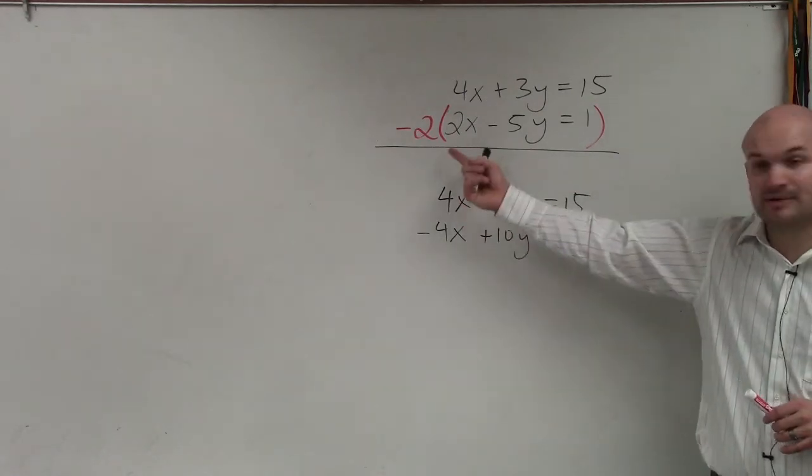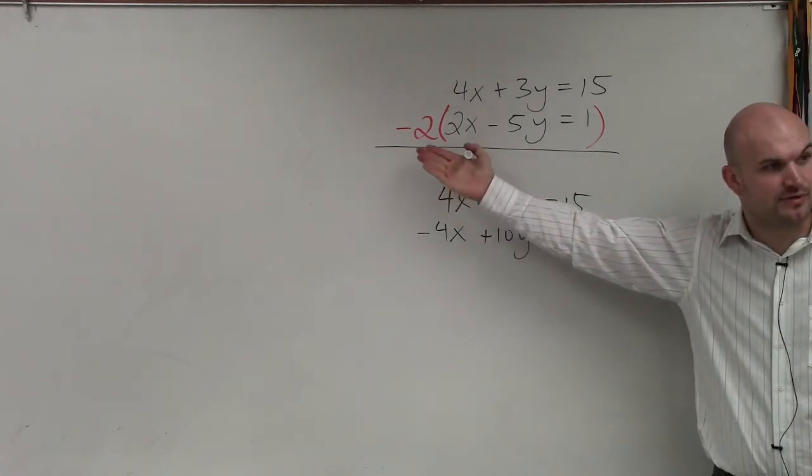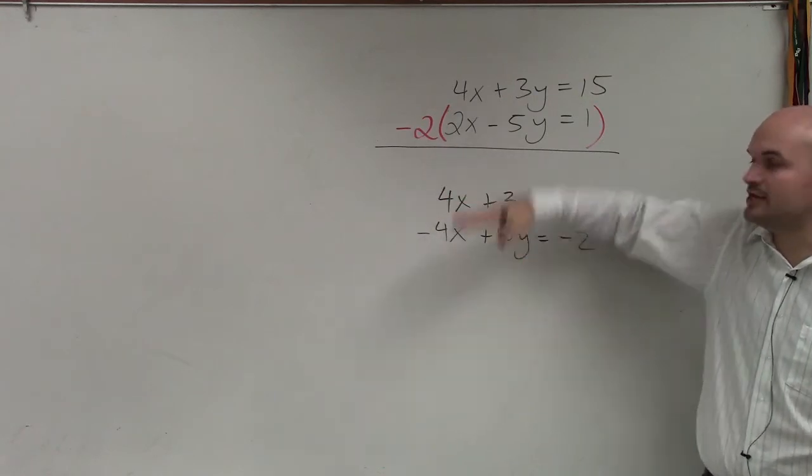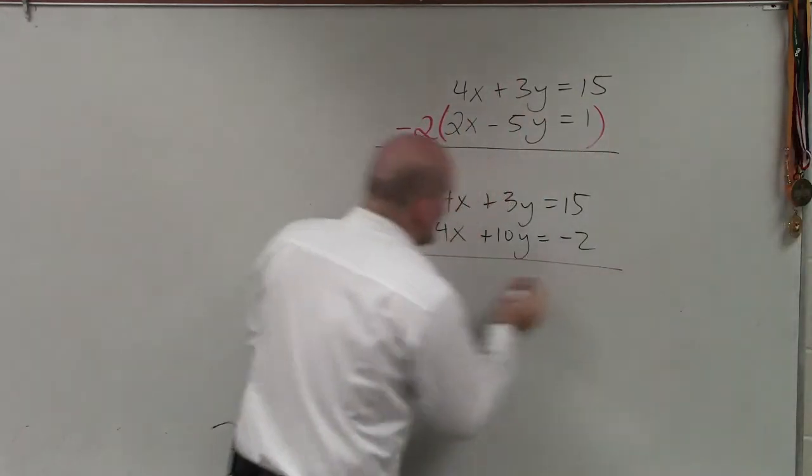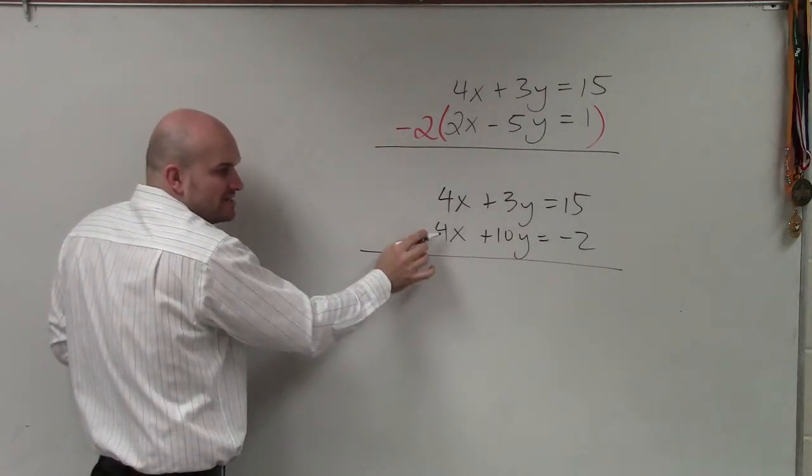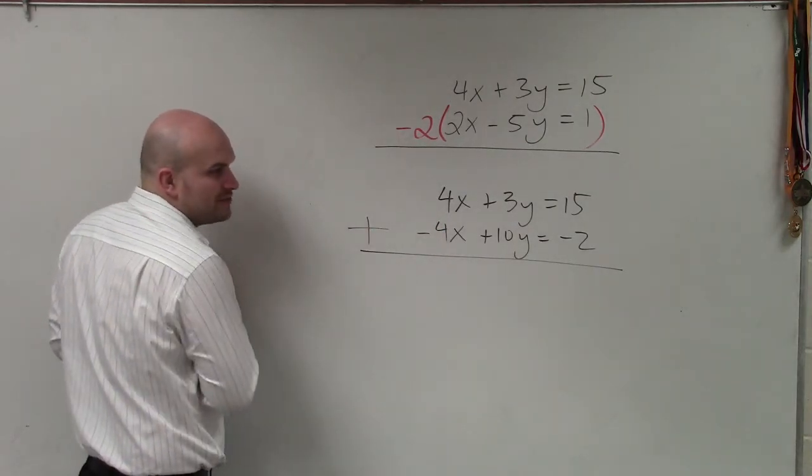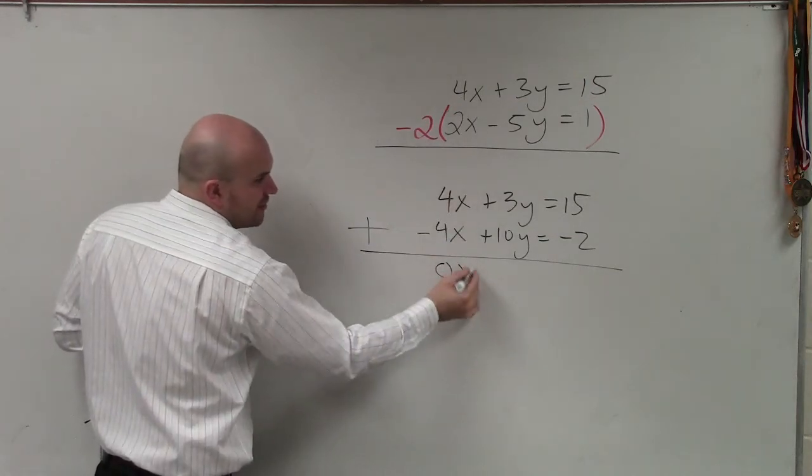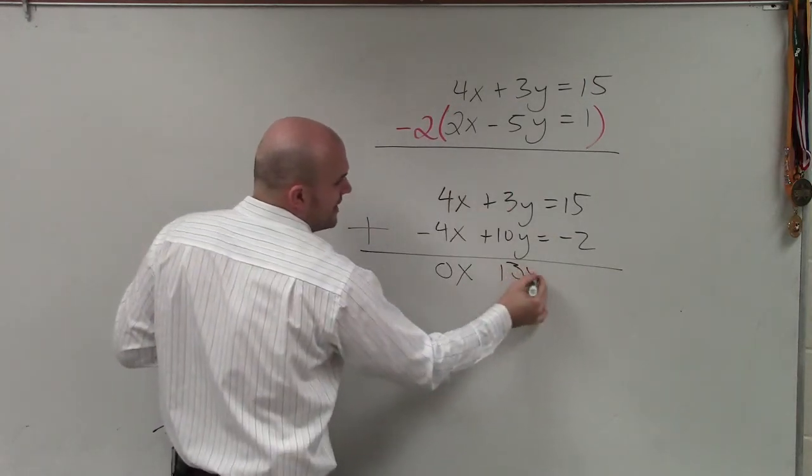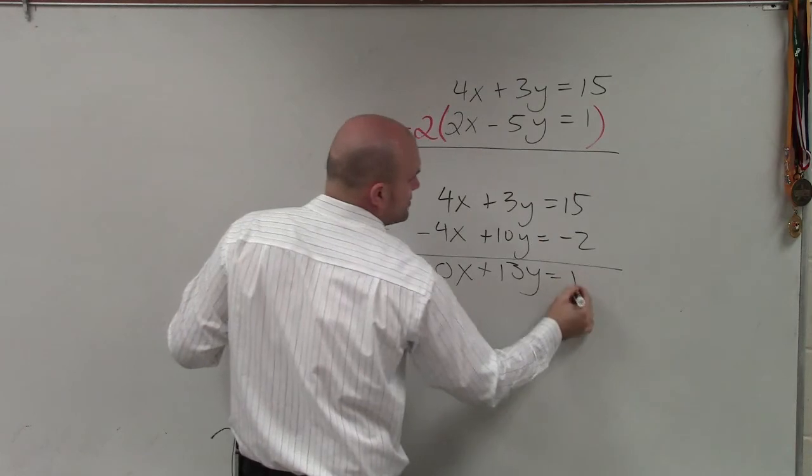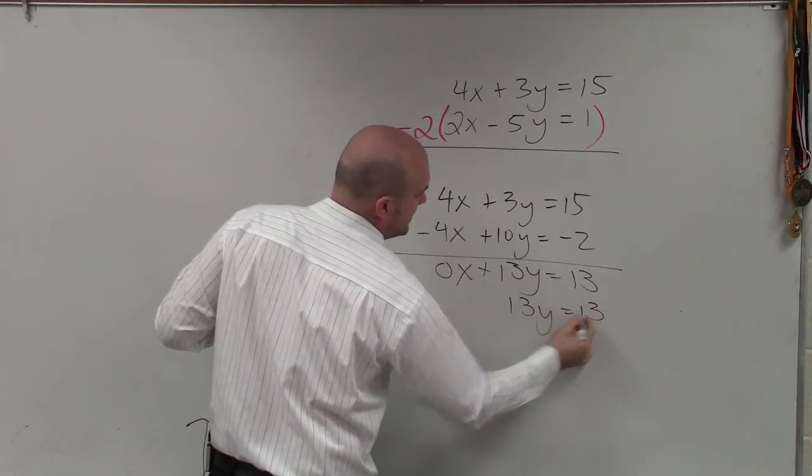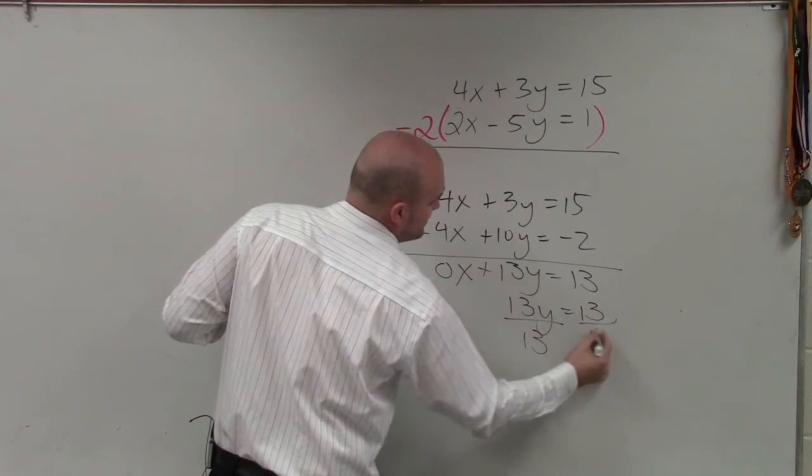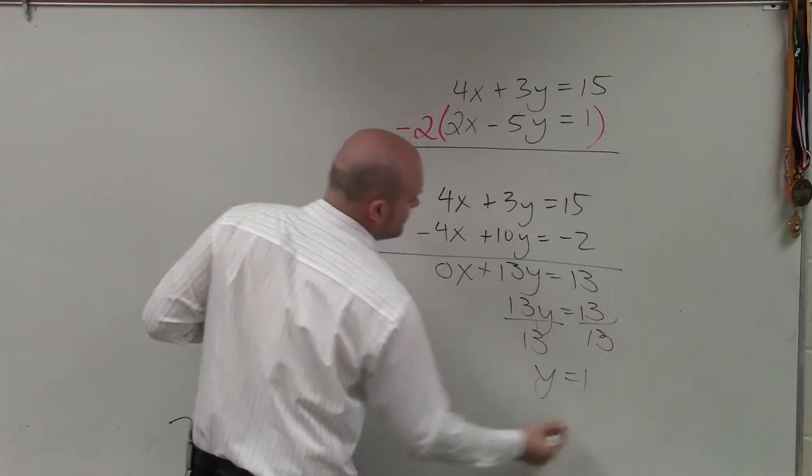You didn't have to multiply by negative 2. You could have multiplied by positive 2. But if you multiply by positive 2, then you would have to subtract the two equations. Now, I have the coefficients for x are positive and one's negative. So I can just add the two equations. Here I get 0x, 13y equals 13. So 13y equals 13, divide by 13, divide by 13, y equals 1.